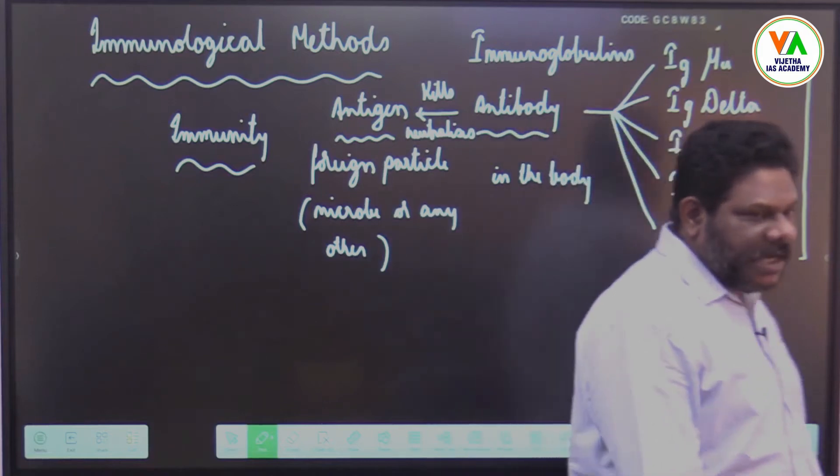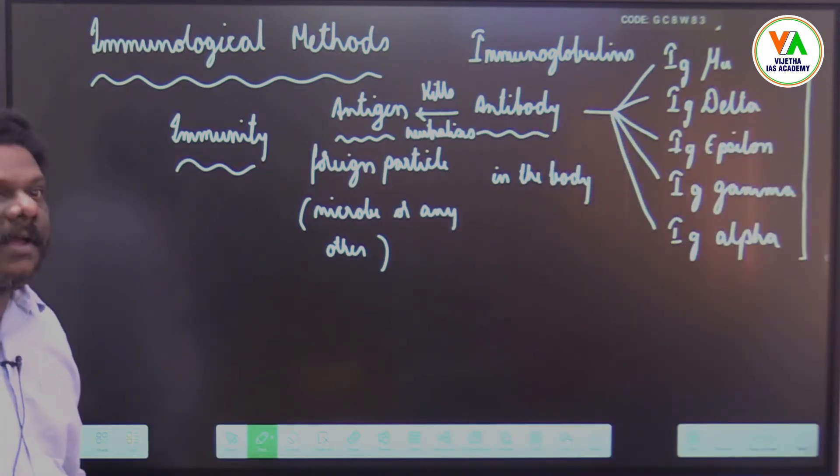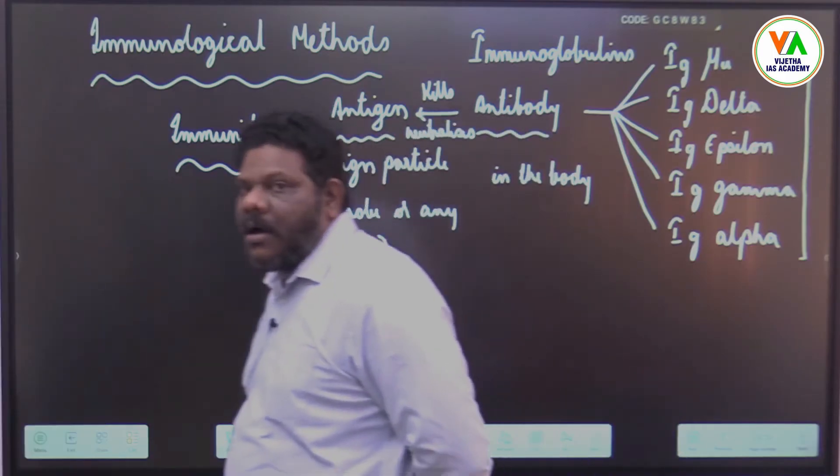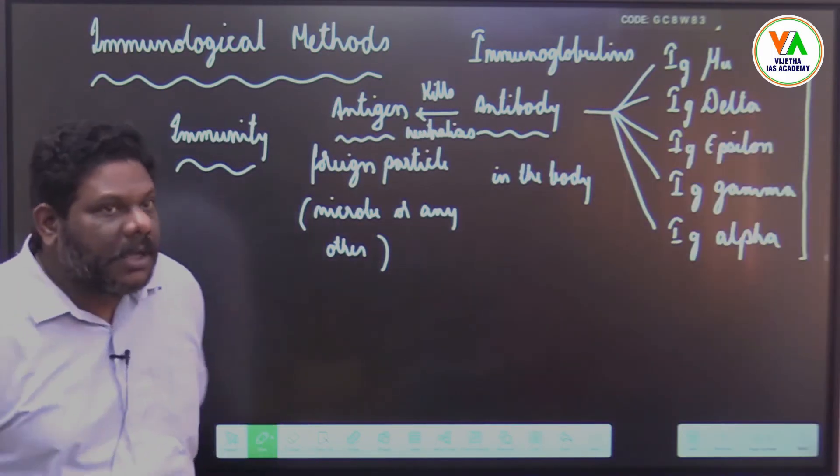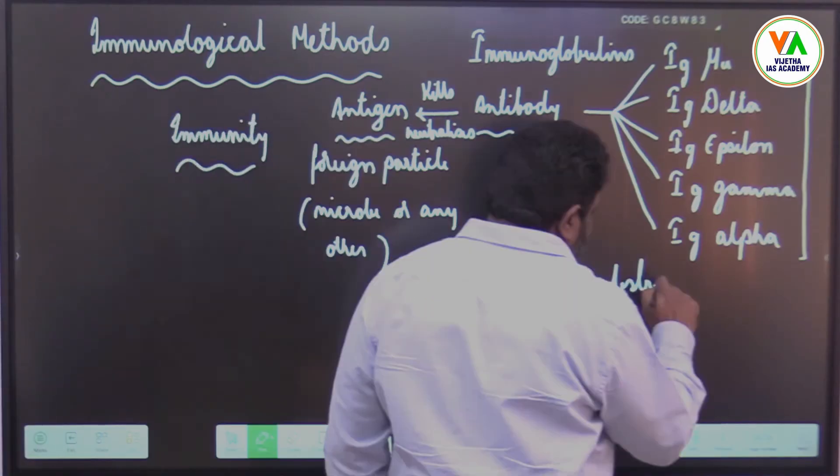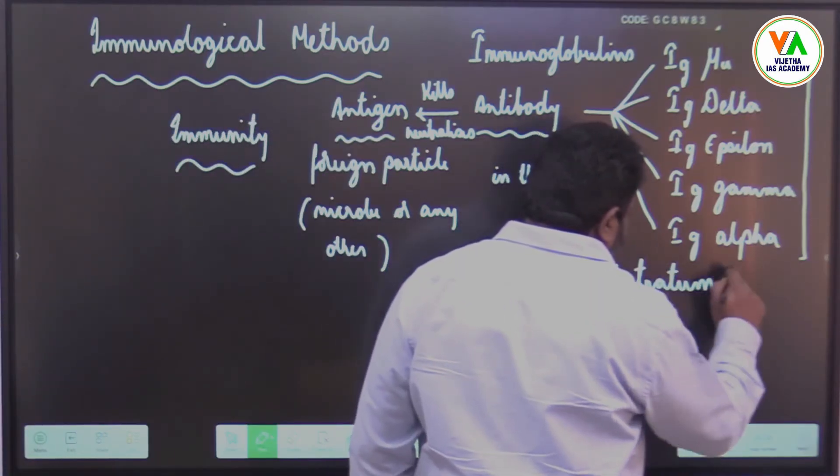Immunological methods are techniques used to identify the presence of antigen or antibody or any other protein in a biological substratum or specimen.